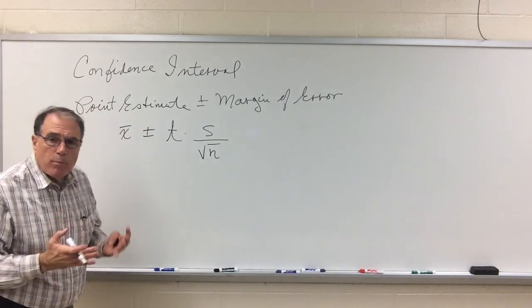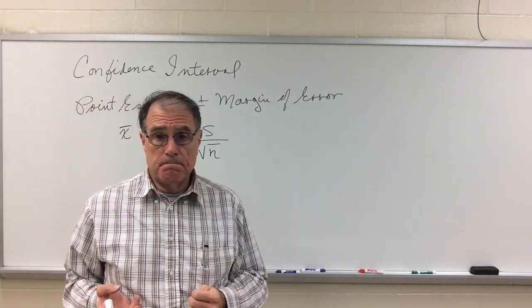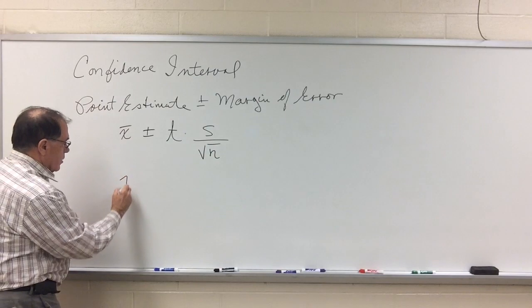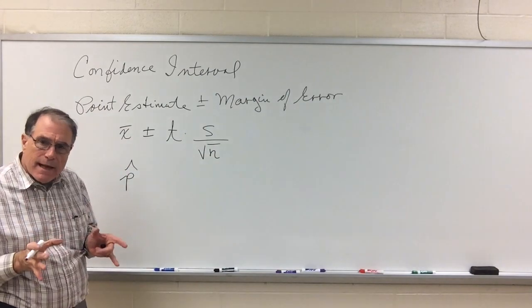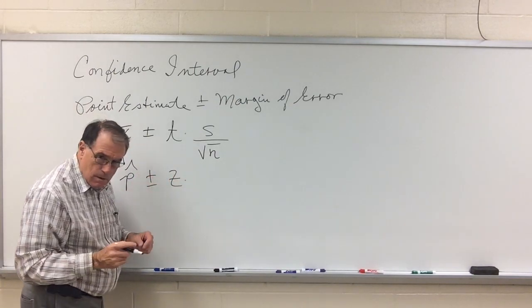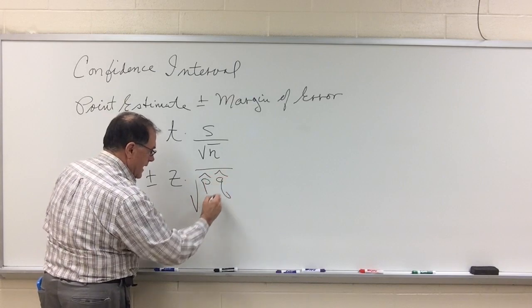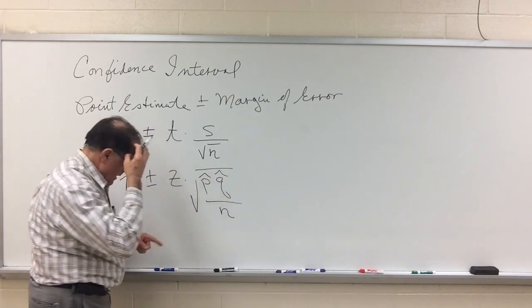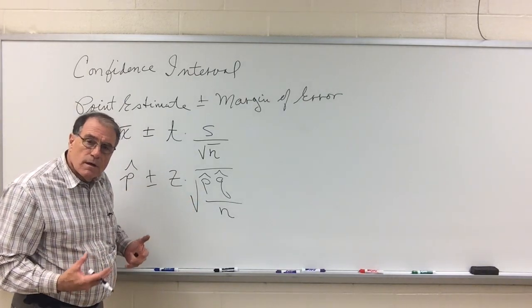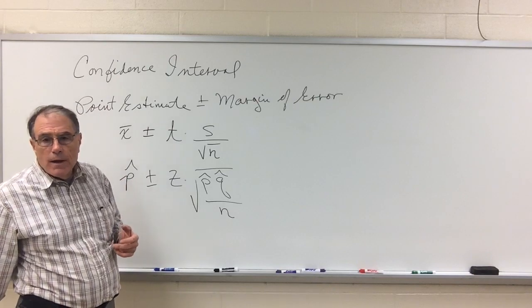If I'm working with a proportion, then I collect some data, say, that bag of M&Ms, and I get my point estimate, which would be a proportion, which I will call p-hat, taken from that sample. And then my margin of error will be a z-score, and the standard error will be the square root of p-hat times q-hat divided by n. Now, this p-hat is the same as this p-hat. That's the proportion of interest.